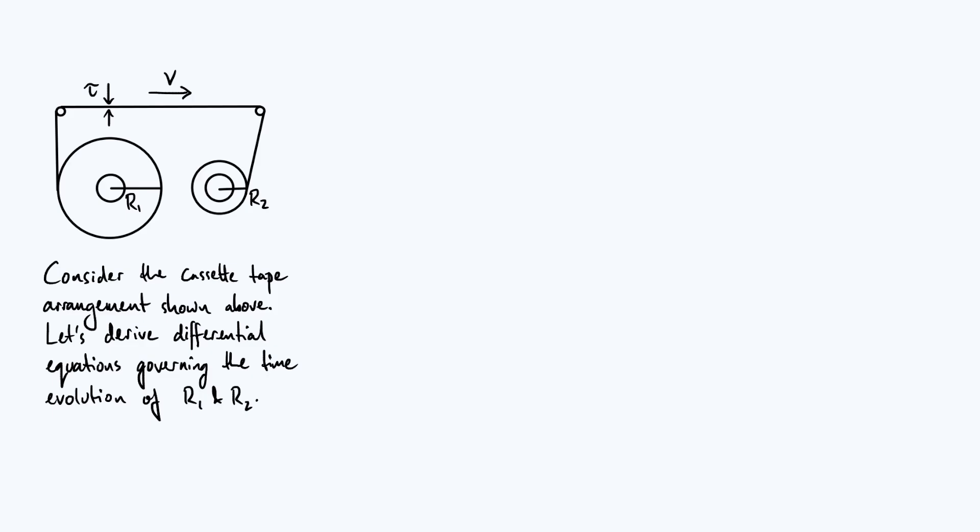However, we're not going to assume anything about the velocity v. So v may be a constant throughout the entire process of rolling the tape from the left spool onto the right spool, or it might vary.